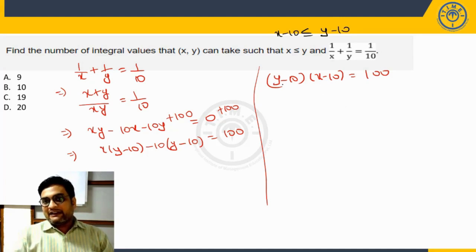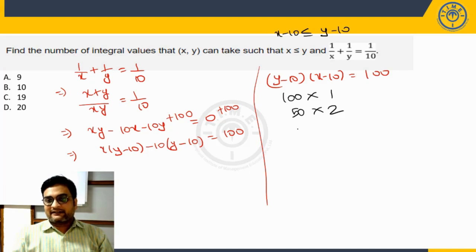When you are putting in values, give y minus 10 a higher value. I can write as 100 into 1, or 50 into 2, or 25 into 4, or 20 into 5. Next 20 into 5, 6 won't work, 8 won't work, 7 won't work, 9 won't work, 10 into 10.